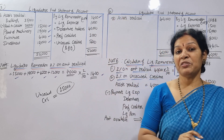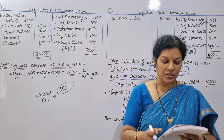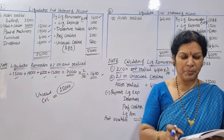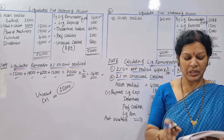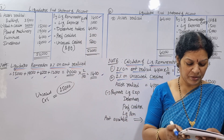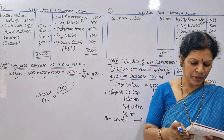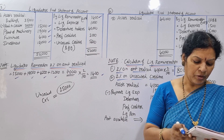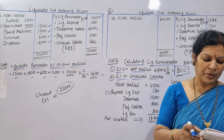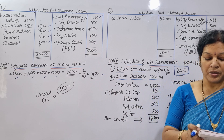Next: liquidation expenses. The cost of winding up is $1,800.